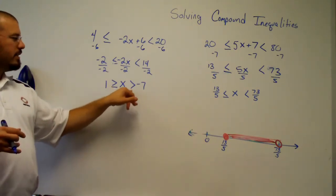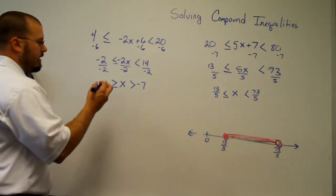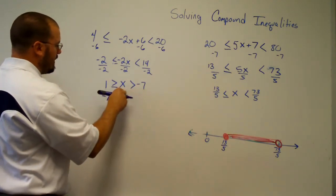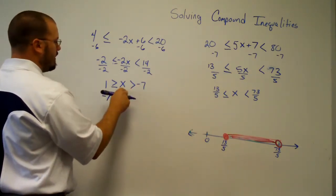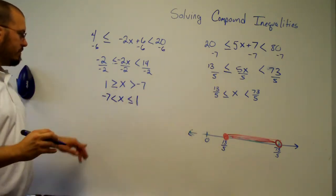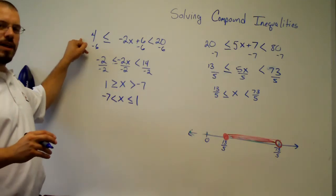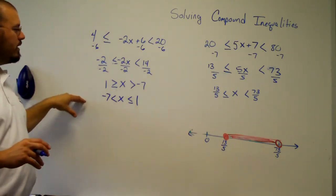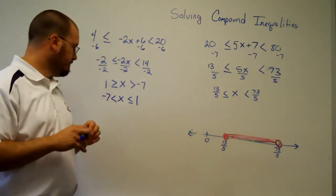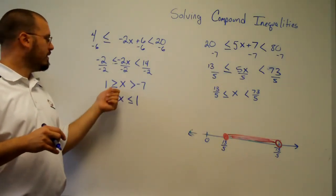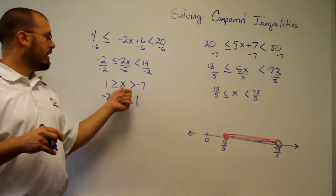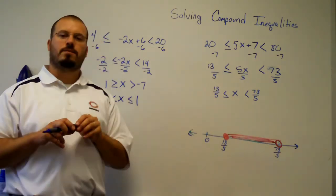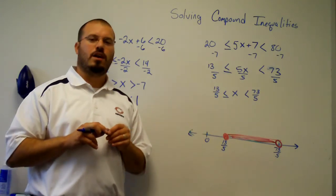My solution is 1 ≥ x > negative 7. It's common to write this in least-to-greatest order, so that becomes: negative 7 < x ≤ 1. This was solving a compound inequality — in this case I kept it all together as one inequality and worked through it at once. Splitting it would also work, giving x ≤ 1 and x > negative 7, then piecing them back together as a compound inequality.